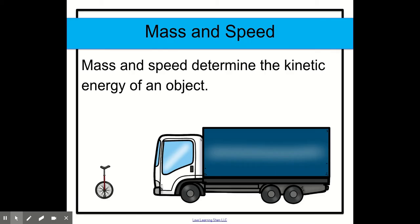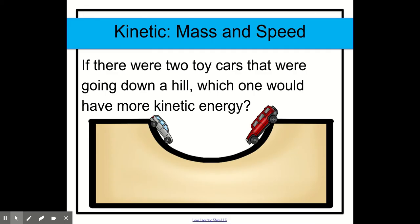When you're dealing with kinetic energy, mass and speed have a lot to do with how much kinetic energy it has. So let's look at this big old truck and this bicycle or unicycle. The unicycle has a lot less mass than the truck does. And so you know that when it is in motion, the kinetic energy of the unicycle is going to be a lot less than the truck. So if there were two toy cars that were going down a hill, like as you see in this picture, which one would have more kinetic energy? On one side, you see a large red car. And on another side, you see a smaller gray car. The car that is bigger is going to go down much faster and has more kinetic energy.